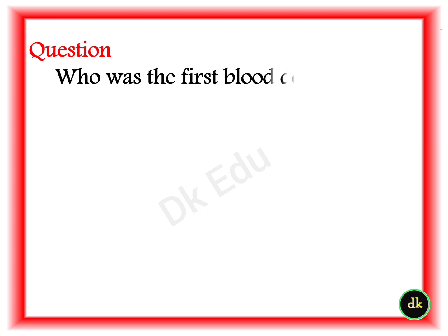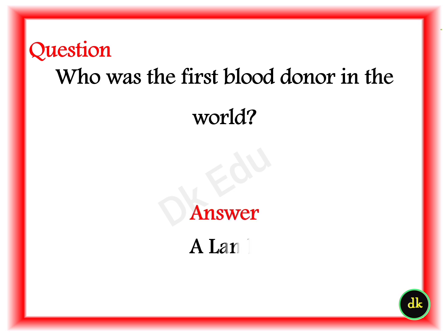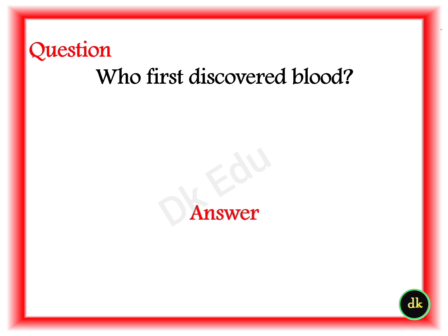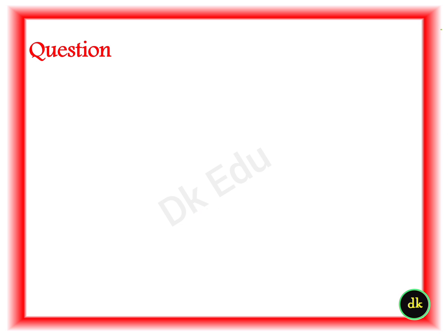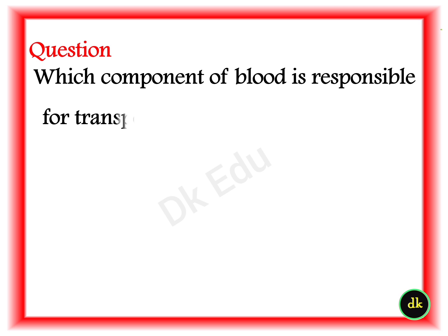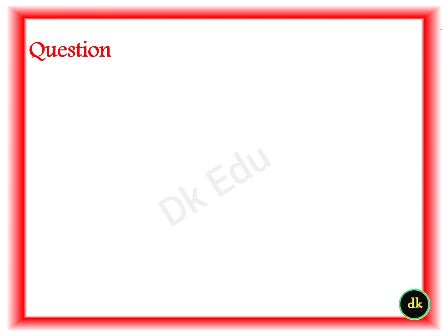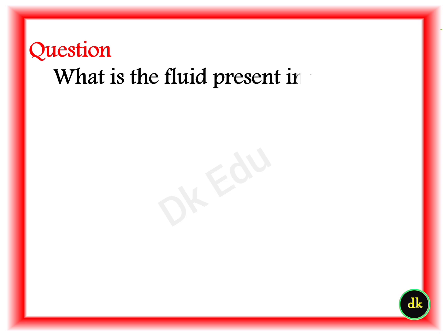Q: Who was the first blood donor in the world? A: A lamp. Q: Who first discovered blood? A: William Harvey in the 17th century. Q: Which component of blood is responsible for transporting oxygen to body tissues? A: Red blood cells (RBC). Q: What is the fluid present in the blood called?